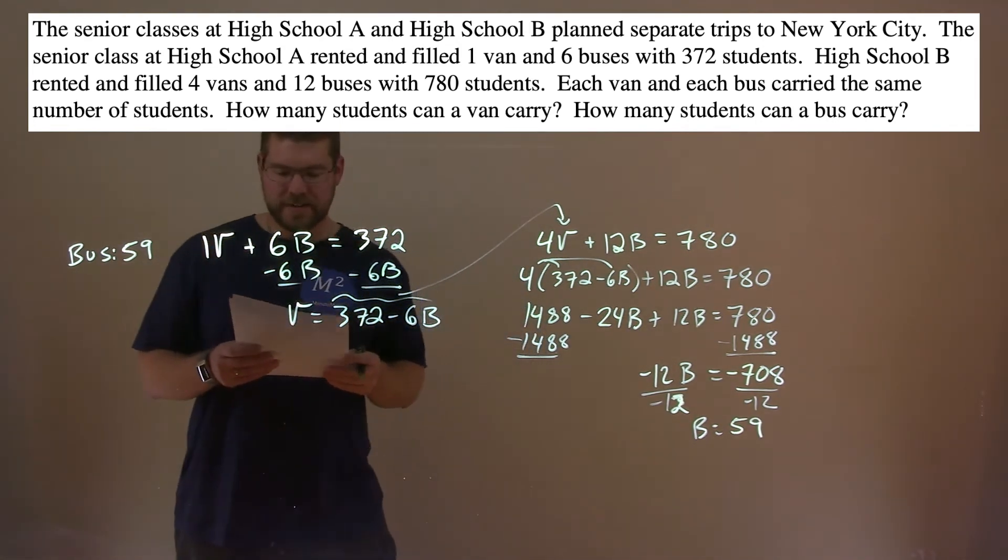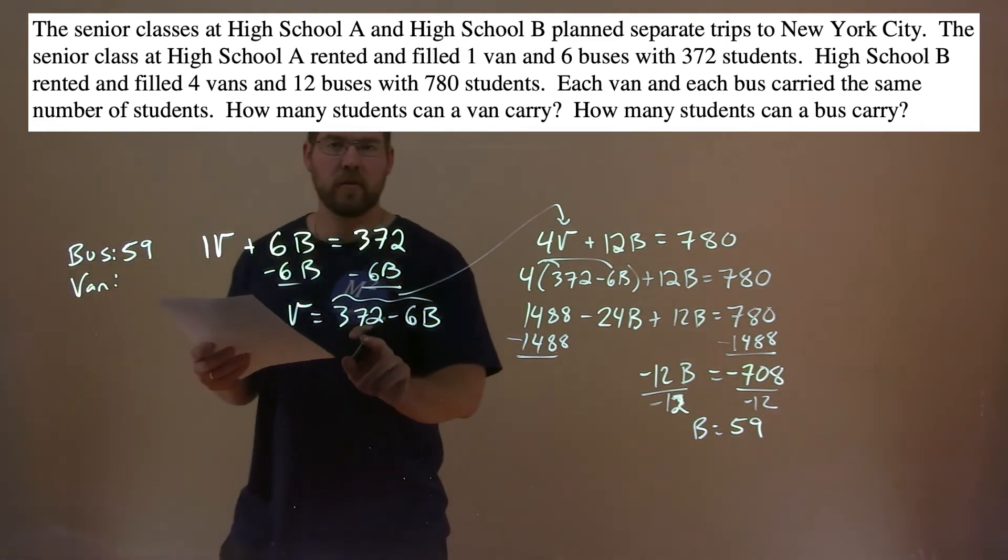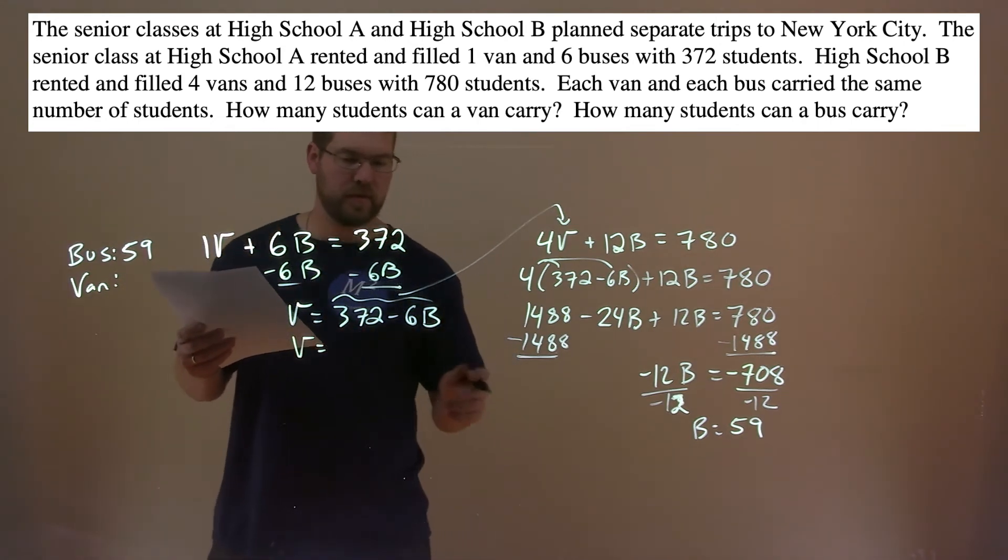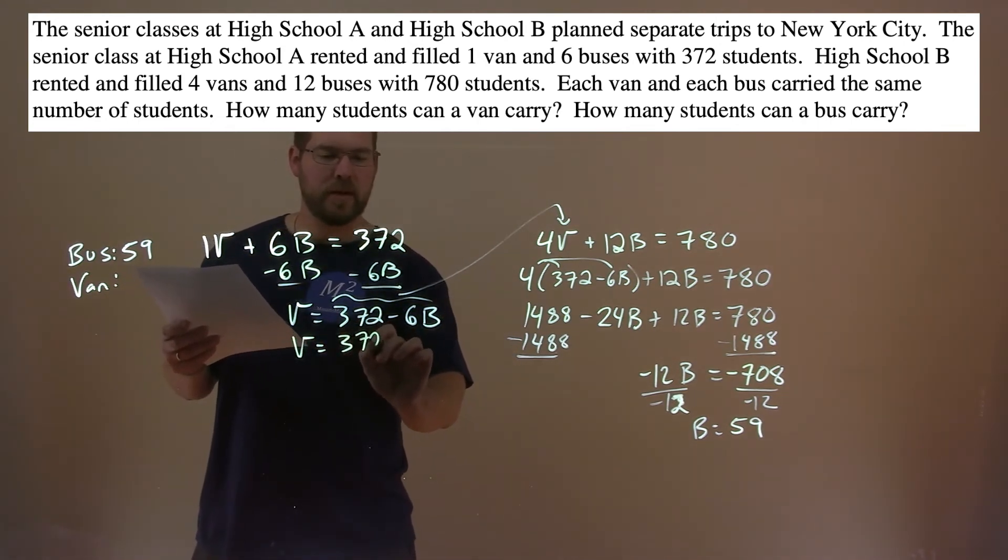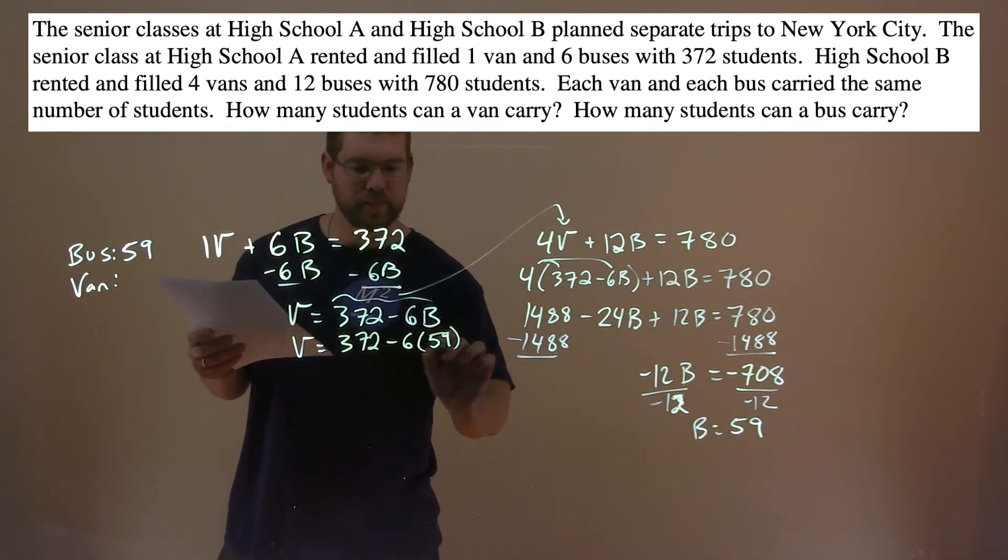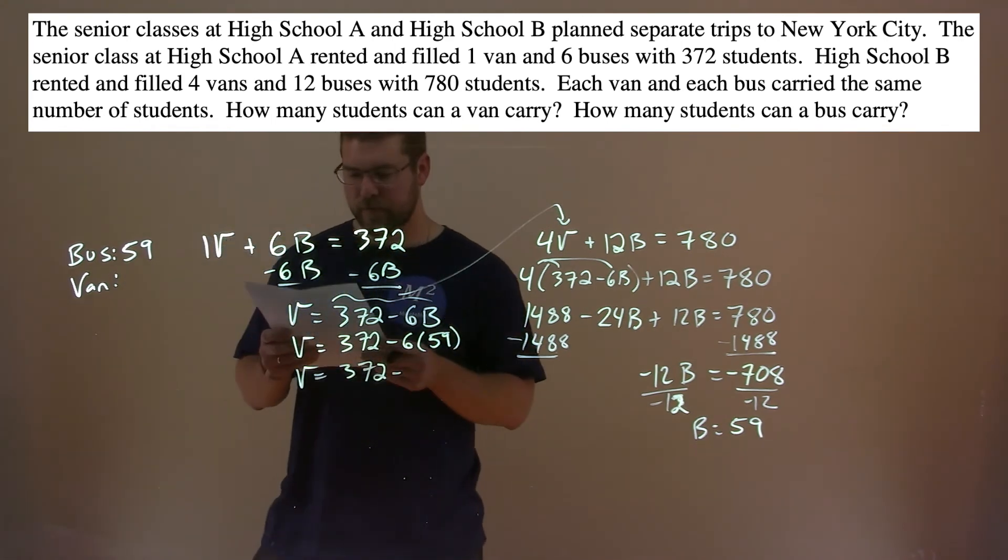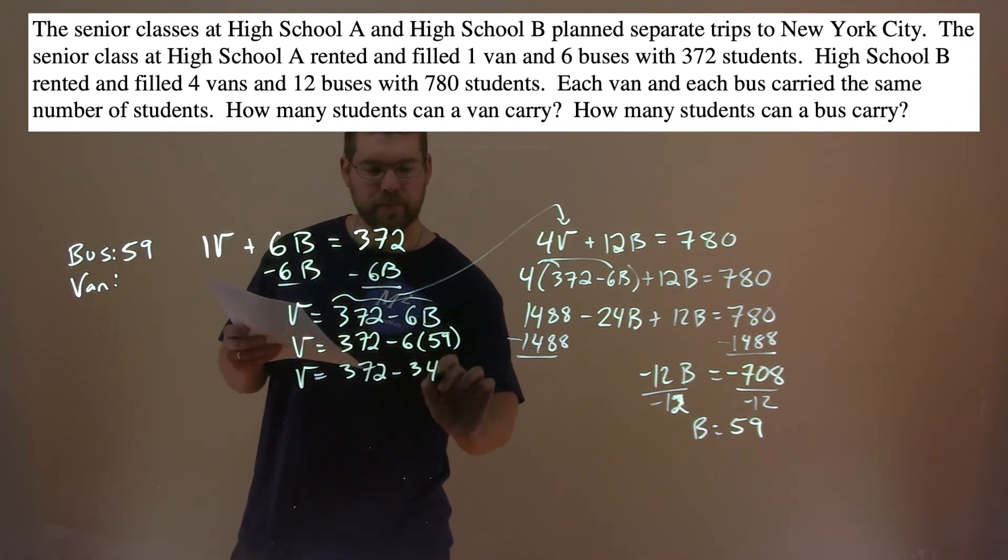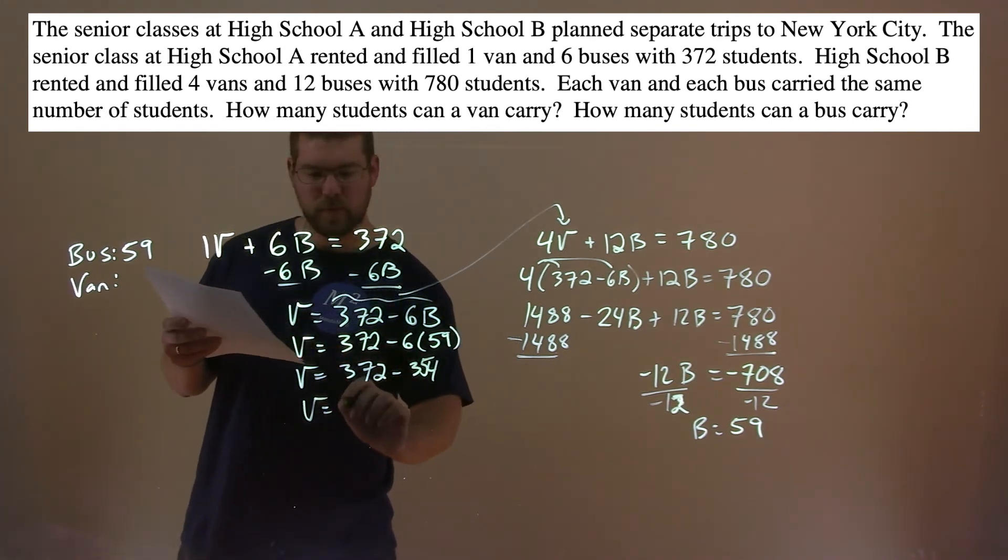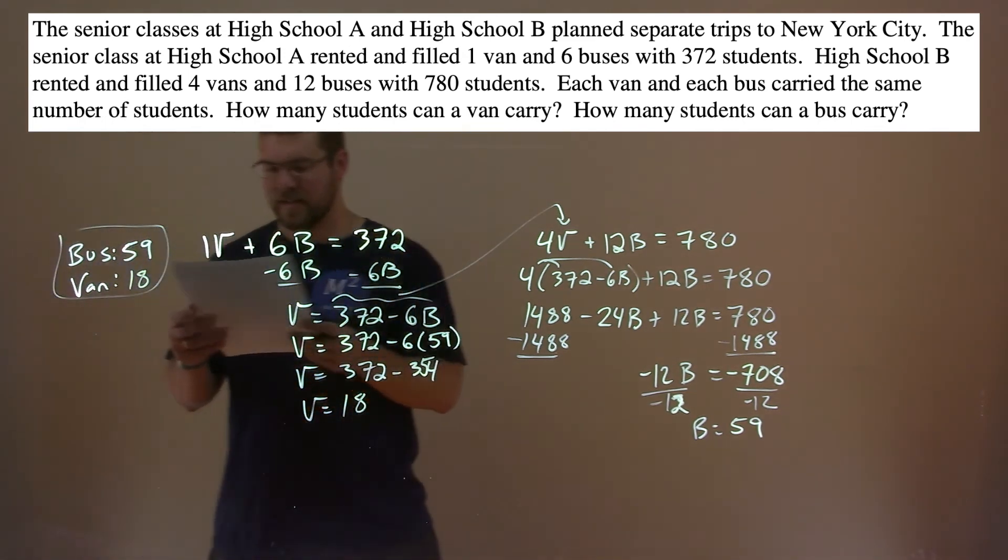So now we want to find how much the van holds. Okay, well, we need to use our other equation, or one of our equations, but this one's easier. We've already adapted it to what we need. V equals 372 minus 6 times B, 59. 372 minus 6 times 59, which is 354. And V is 372 minus 354, which is 18. So the van is going to have 18 students.